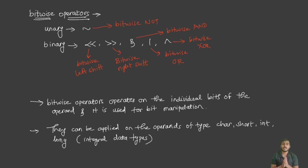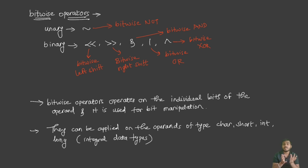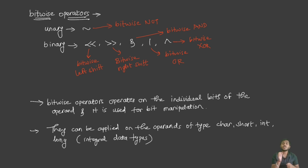In this video we are going to discuss bitwise operators in C++. Bitwise operators, as the name suggests, work on individual bits of our data. All other operators we have seen previously — like arithmetic operators and logical operators — work on complete data, but bitwise operators are a little bit special: they work on individual bits of data.